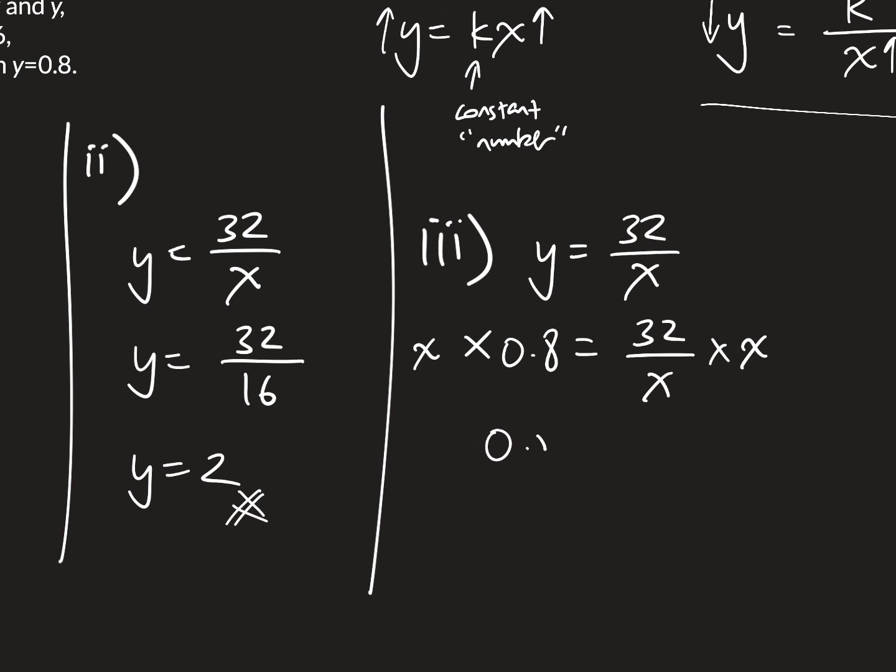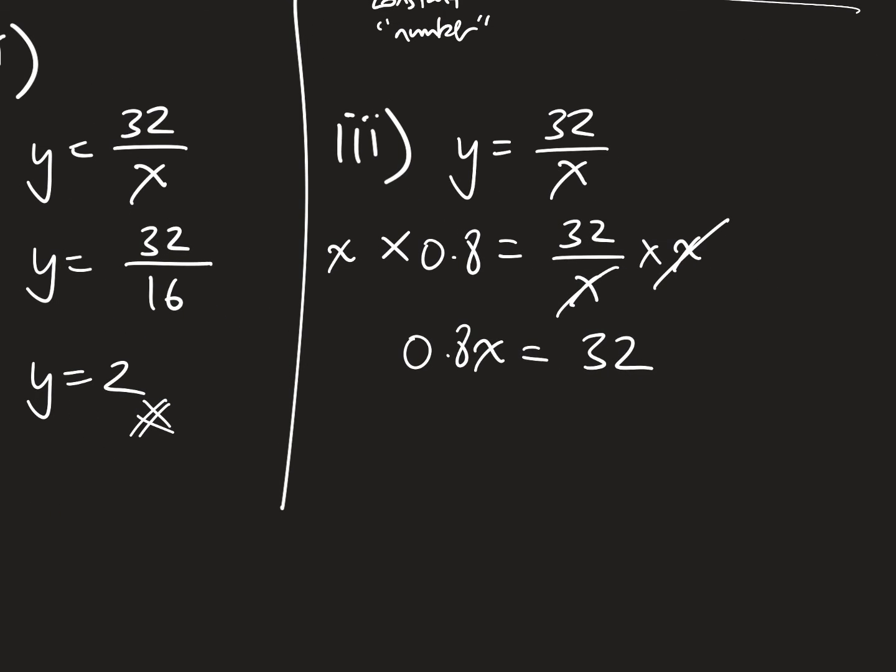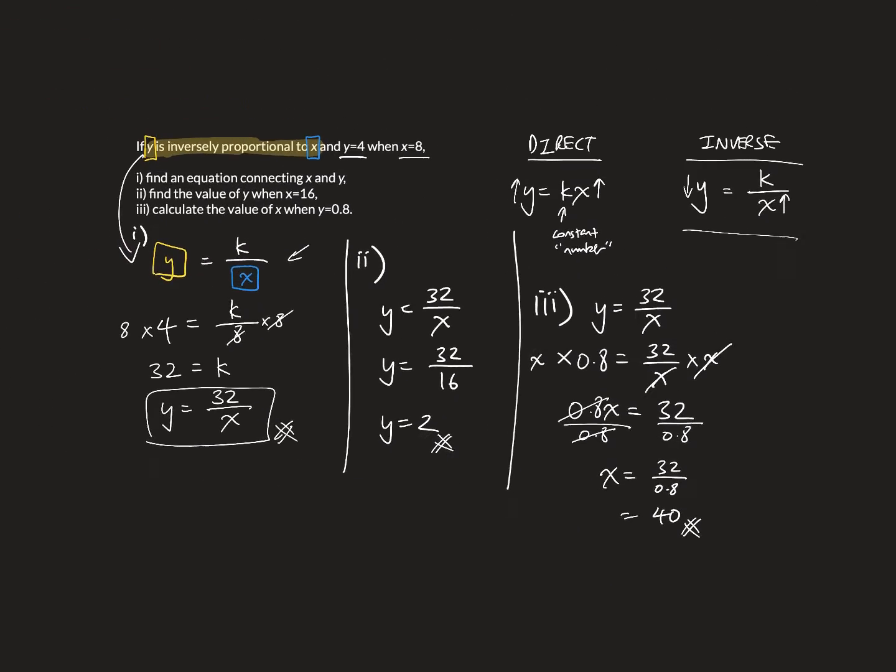So this is 0.8x. And the x is cancelled out. This is 32. Next step, we want to get rid of this 0.8. So let's divide both sides by 0.8. To cancel out x equals to 32 over 0.8. And this gives me 40.